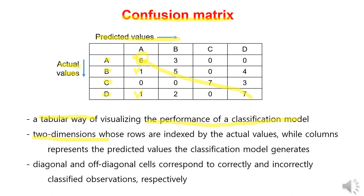Similarly, for class B, it predicts it eight times, out of which five are correct, three are incorrectly predicted as A, and two are incorrectly predicted as D.